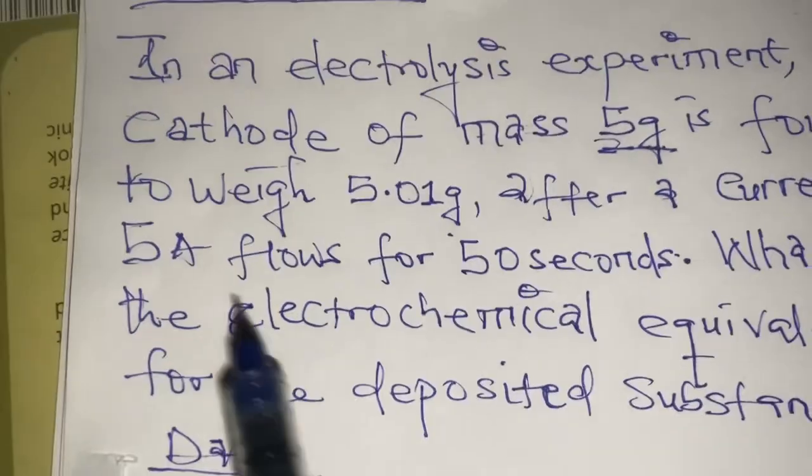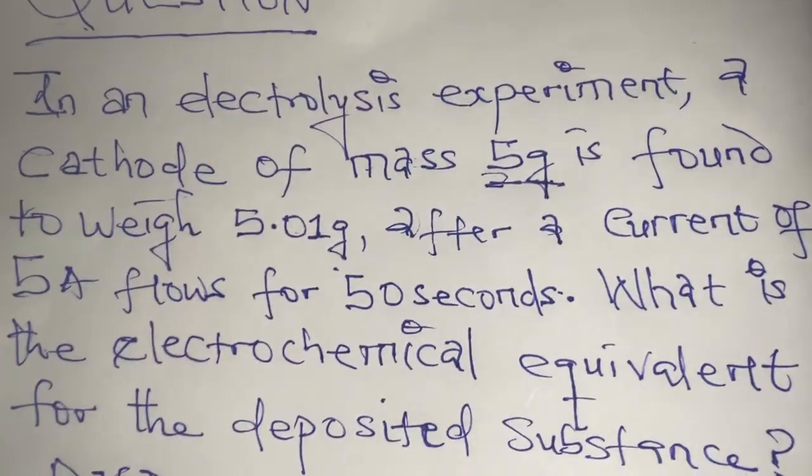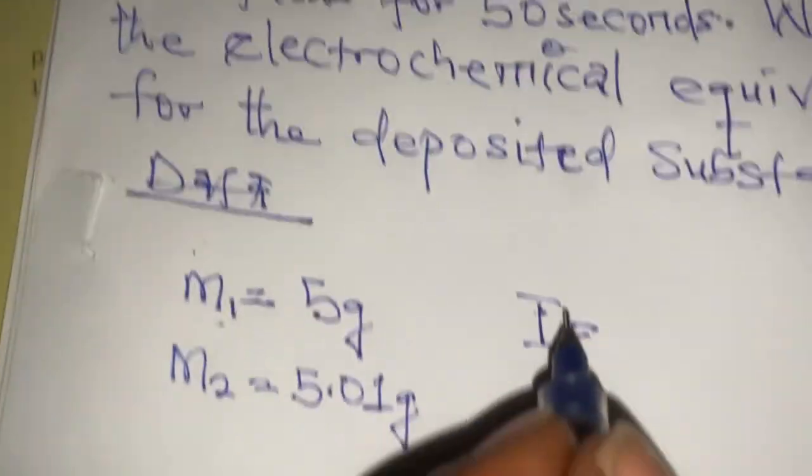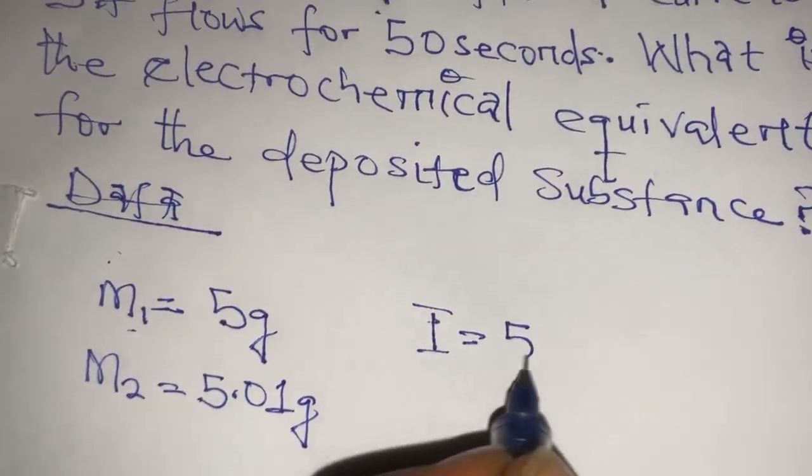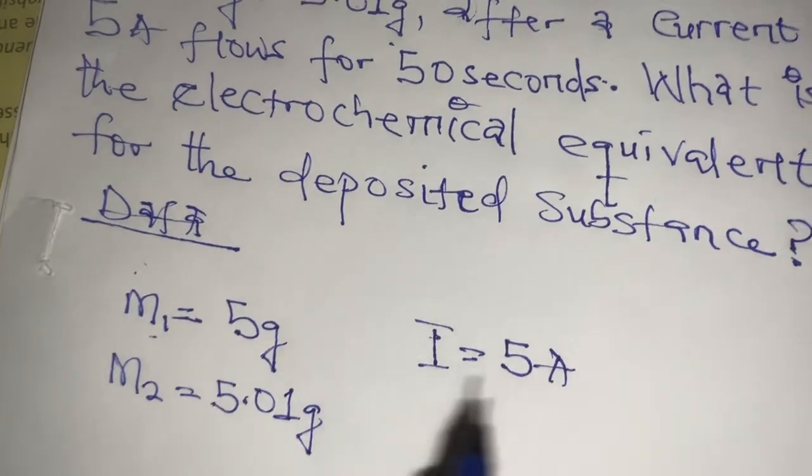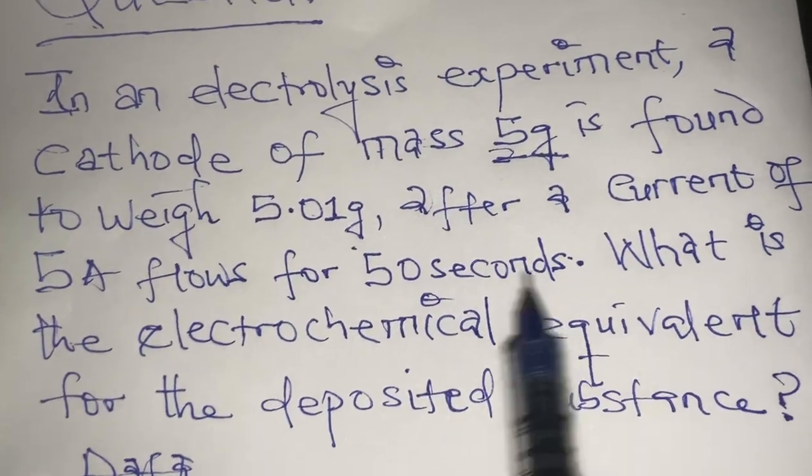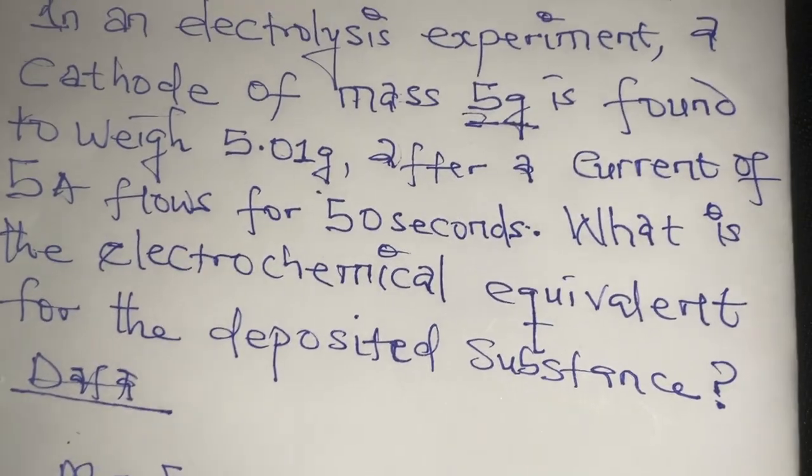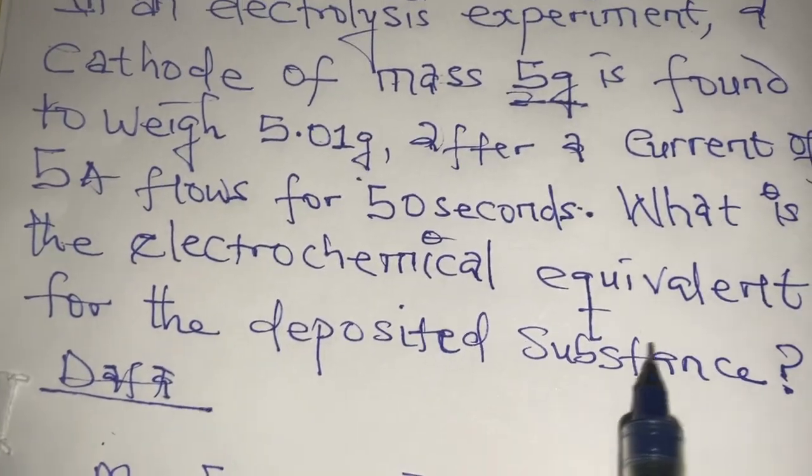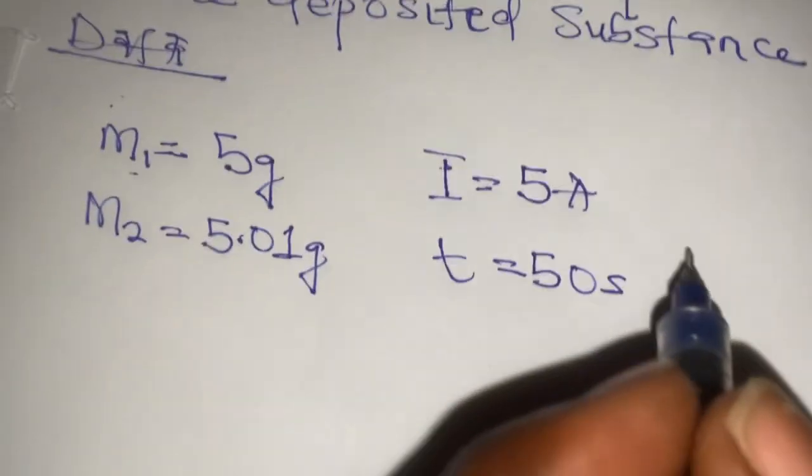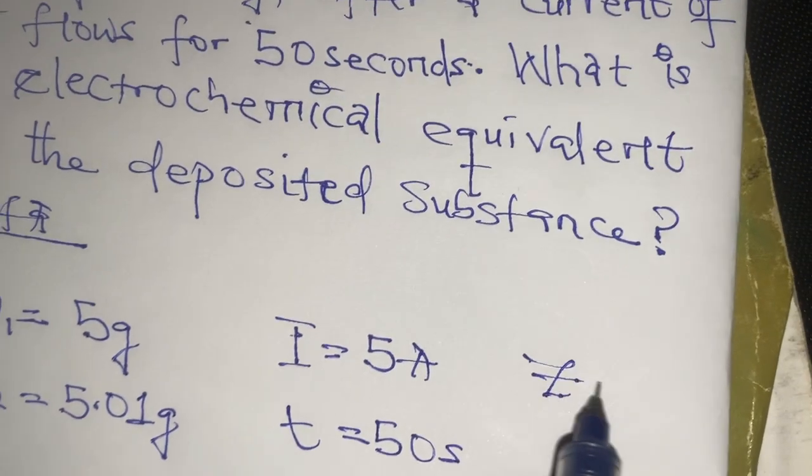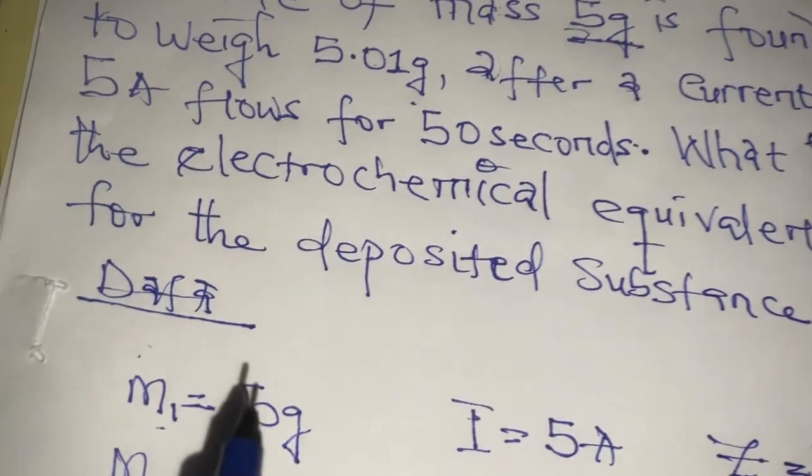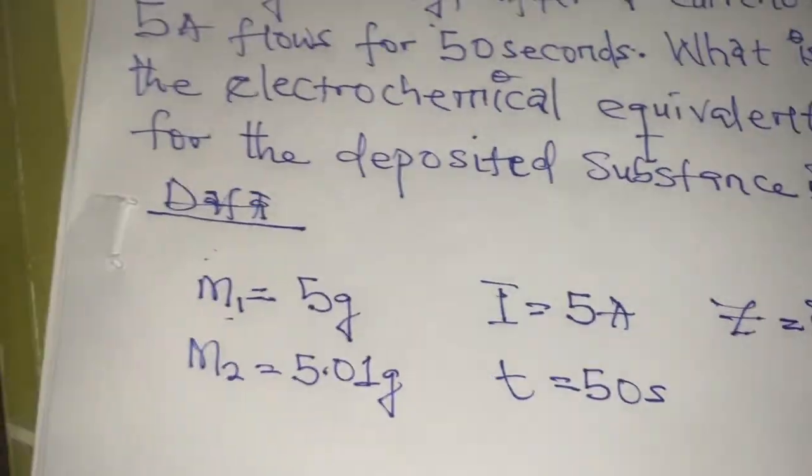After a current of 5 Ampere, we have a current I equals to 5 Ampere flows for 50 seconds. We have time T equals to 50 seconds. What is the electrochemical equivalent? What is Z in this question for the deposited substance?